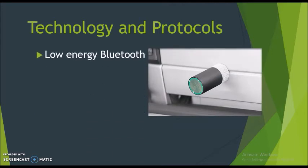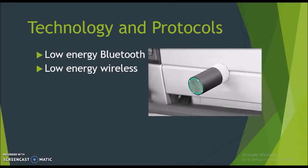Low energy Bluetooth: this technology supports the low power, long-use needs of IoT function while exploiting a standard technology with native support across systems. Low energy wireless: this technology replaces the most power-hungry aspect of an IoT system. Sensors and other elements can power down over long periods, but communication links must remain in listening mode. Low energy wireless reduces consumption and extends device life.